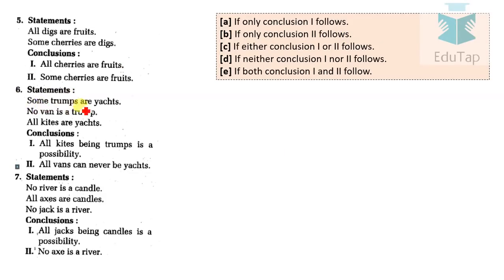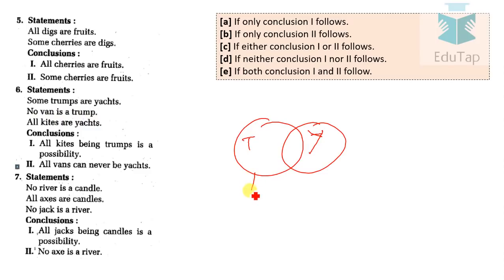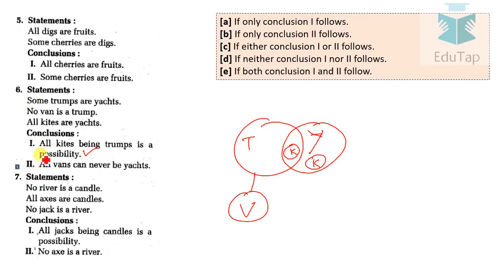Question 6: Some Trumps are yet. No when is Trump. All kites are yet. Conclusion 1 says all kites being Trump is a possibility — this is possible since kites can be drawn within Trump. Conclusion 2 says all whens can never be yet, but there is no restricting relation, so this does not follow. The answer for question 6 is option A: only conclusion 1 follows.